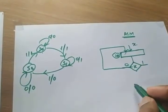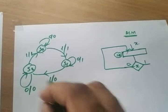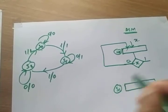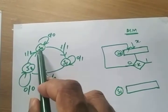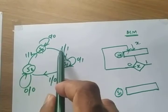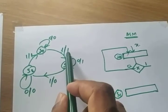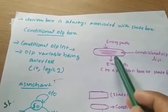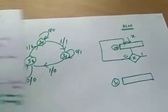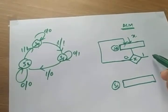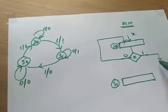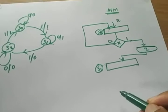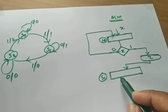Now I have to draw another state. For S0 with input 1, the next state is S1, but the output is 1. To represent output 1 in a Mealy circuit, we need to draw a condition box. This condition box is represented with output Z. Then it goes to S1.